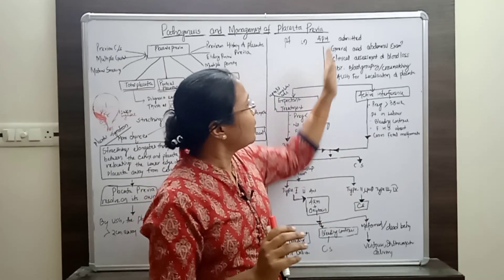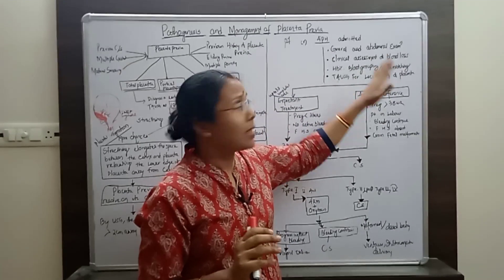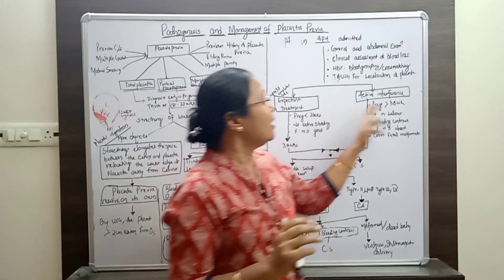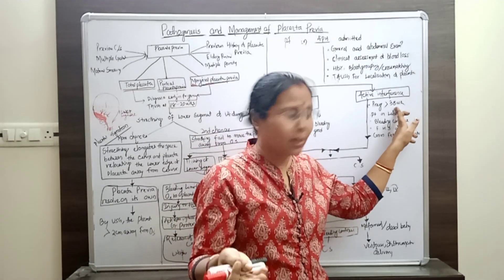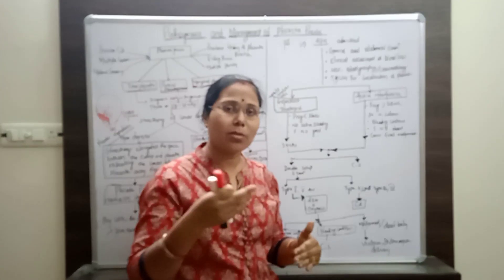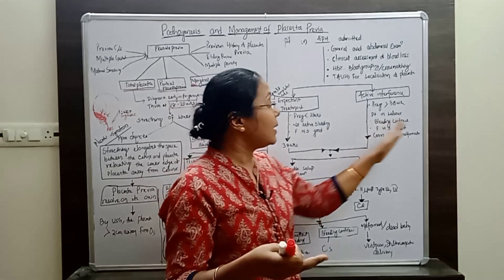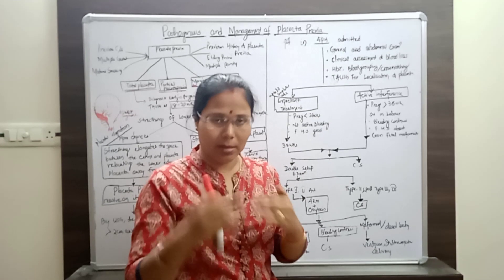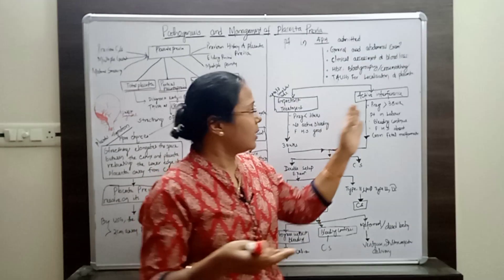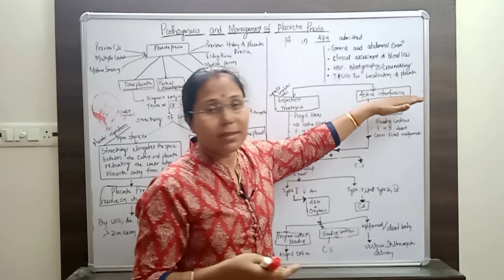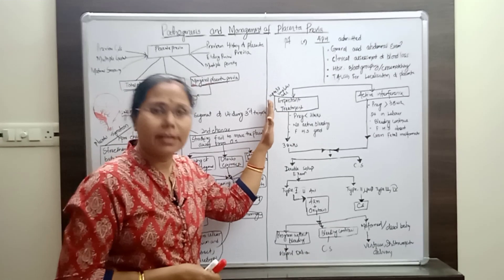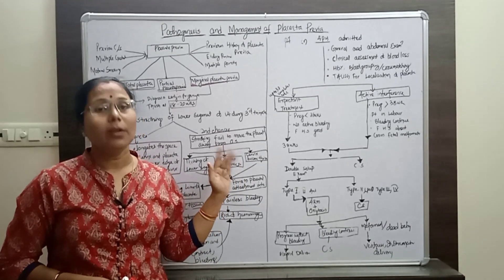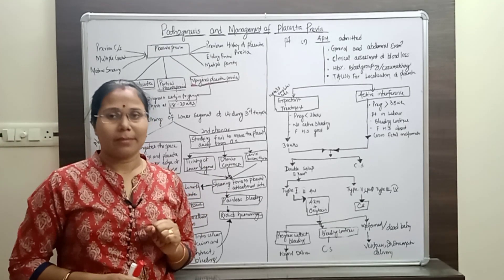Active interference is when the patient comes to hospital and after checking general condition, clinical assessment, blood grouping, hemoglobin, and ultrasound confirming placenta position — if the pregnancy is more than 38 weeks and the patient is already in labor with contractions present and bleeding is continuing — in that case we do not wait for any further management and immediately go for cesarean section. That is called active interference. I hope you understood the management of placenta previa. Please subscribe to the channel. Thank you.